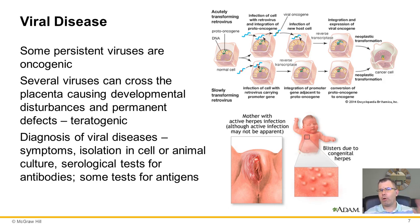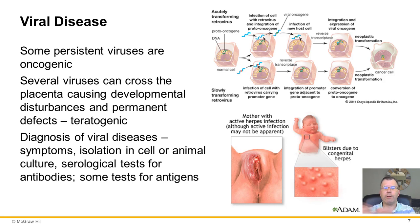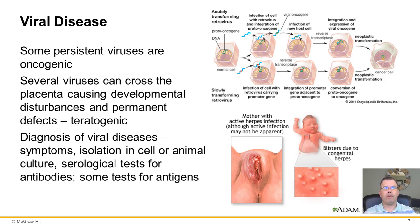Some viruses can also cross the placenta — those are teratogenic, meaning they can cross the placenta and cause damage to or infection in the fetus. Things like herpes can infect the baby very early because it can cross the placenta or during delivery.